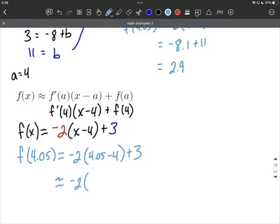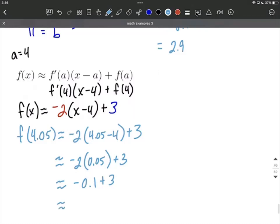So negative 2, we'll work what's inside of our parentheses first. So 4.05 minus 4 is 0.05. We'll multiply next. So negative 2 times 0.05 is negative 0.1 plus 3 is going to give us our approximation that same 2.9 that we came up with going the other method.